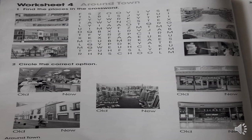Page number 34. Worksheet 4. Around Town. Activity number 1: Find the places in the crossword. Página número 34. Hoja de trabajo número 4. Alrededor del pueblo. Tenemos la primera actividad a desarrollar: tenemos que encontrar los lugares en el crucigrama. Los lugares que hemos aprendido acerca de la lectura de hoy. Las palabras son: school, park, market, supermarket, zoo, and museum. Estas palabras las voy a buscar en esta sopa de letras, crucigrama.